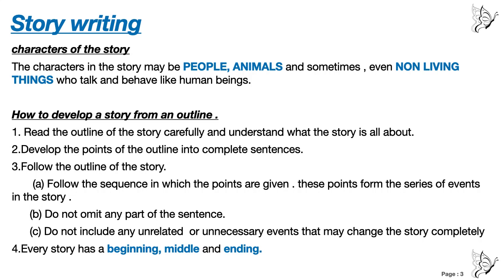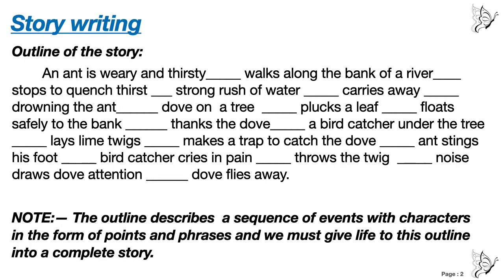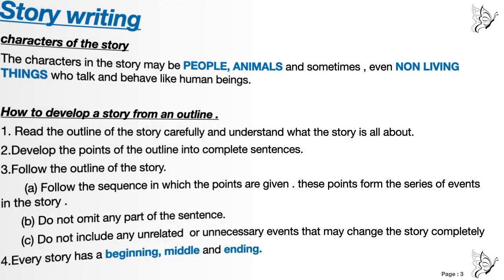Number 2: develop the points of the outline into complete sentences. The points are incomplete. The phrases given in the outline — for example, 'an ant is weary and thirsty' — are not complete. You have to add some more words or phrases to make the point meaningful. For example, 'walks along the bank of a river' — who walks? What happened at the bank of the river? Nothing is mentioned, so you have to add phrases or words to complete those points.